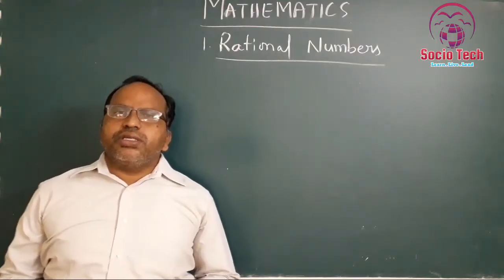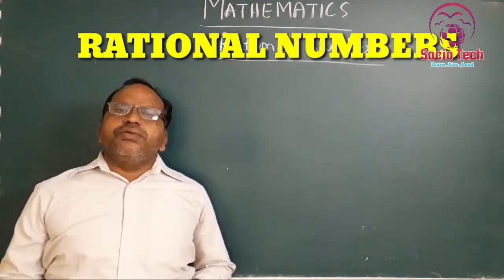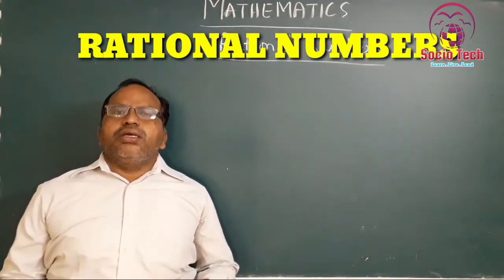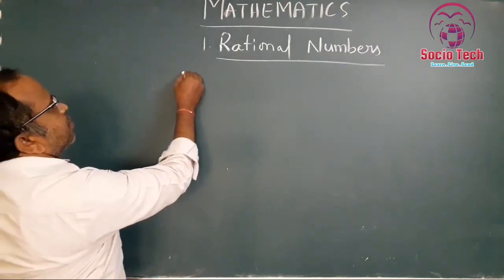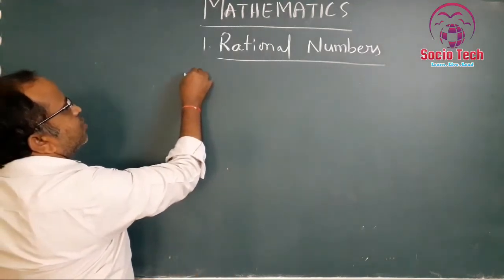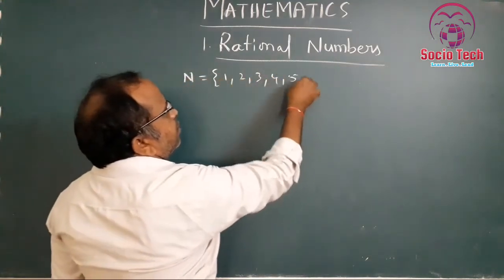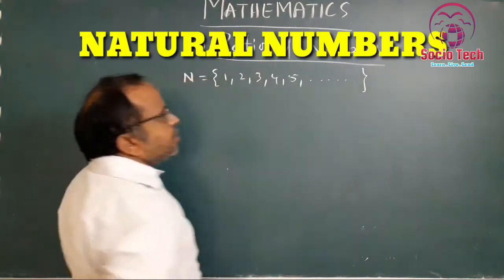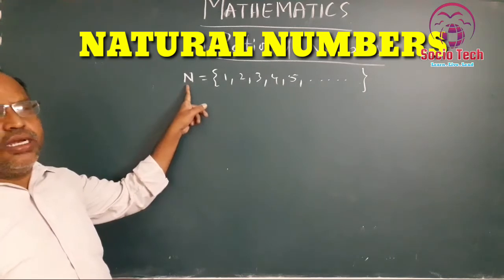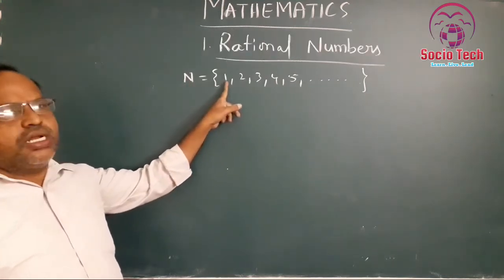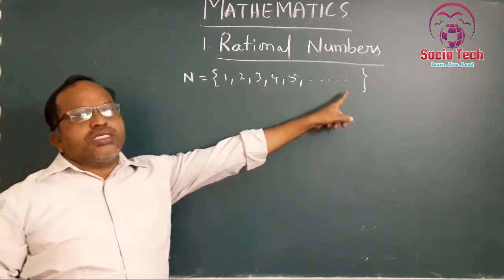Today we are going to discuss about rational numbers. First, let us recall our number system. The natural numbers — the set {1, 2, 3, 4, 5, ...} and so on — are denoted by N. The least natural number is 1, and there is no largest natural number in this set.